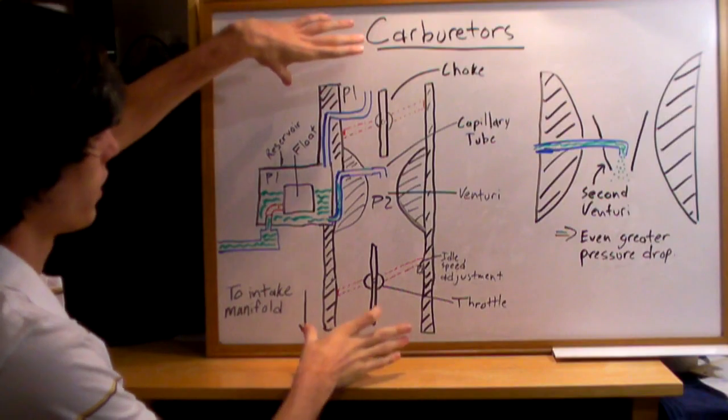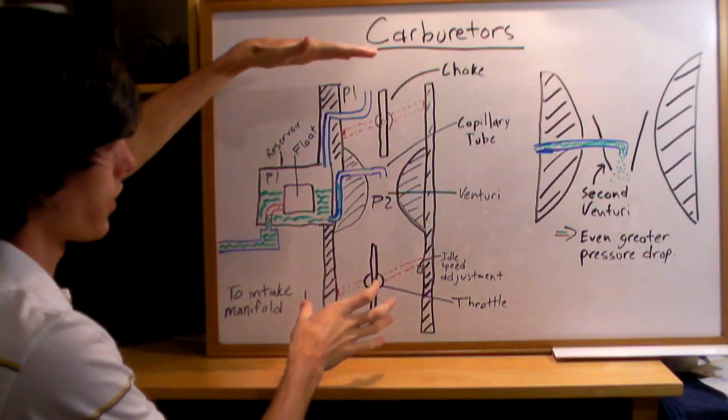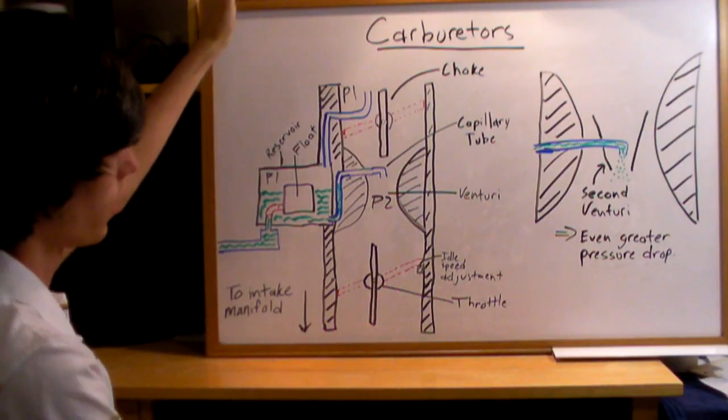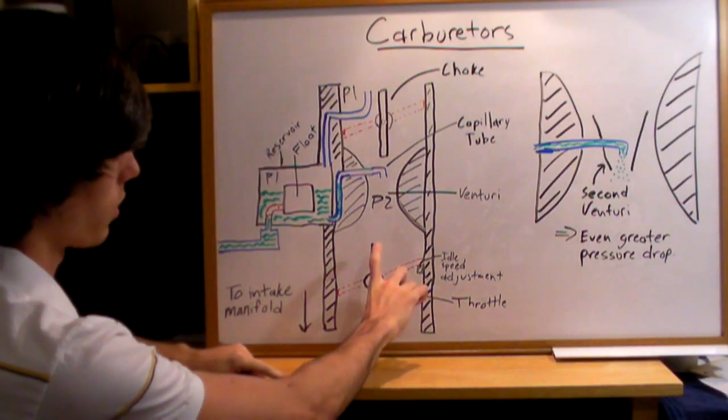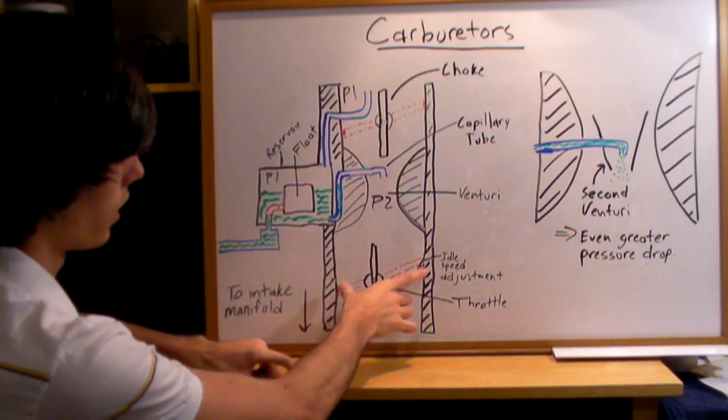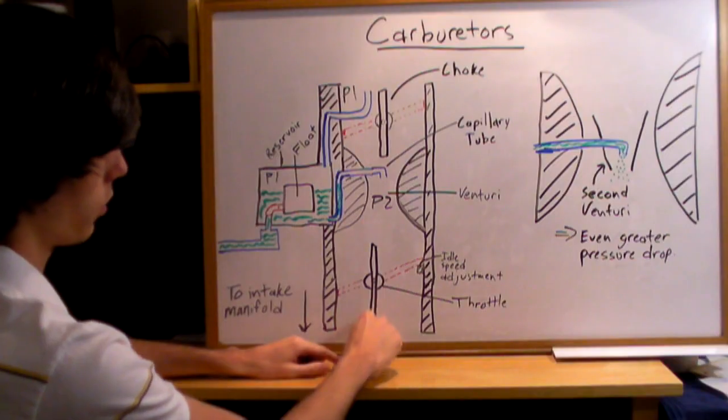What happens is you'll have this carburetor, sometimes mounted directly on top of your engine, with air flowing down through it. Here's your throttle - when you're not pressing the gas it'll be closed, but if you floored it, this is what it would look like.